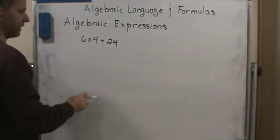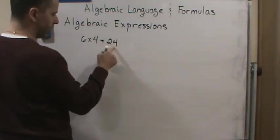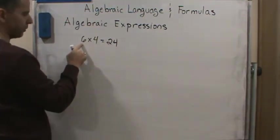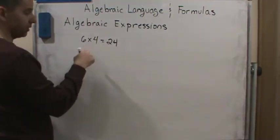And so what do we say, this is the product, right, this is the product, and each of these numbers that we're multiplying together, it's called a factor, right?